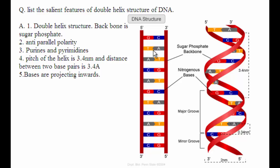These two chains are coiled in a right-handed manner. The pitch of the helix is 3.4 nanometers, whereas the distance between the two base pairs is 3.4 angstroms.